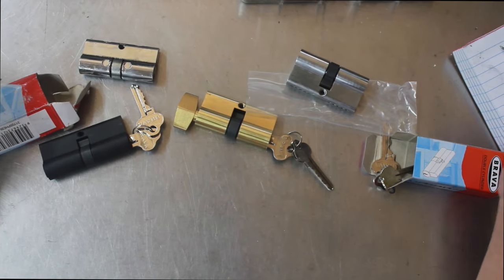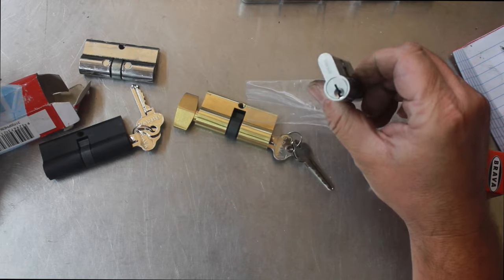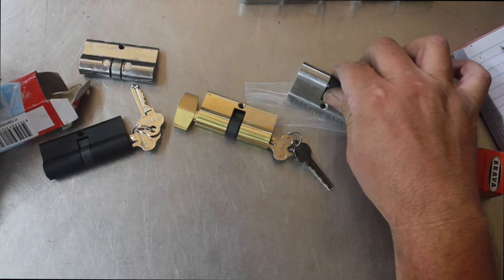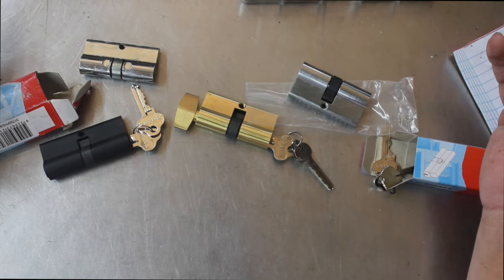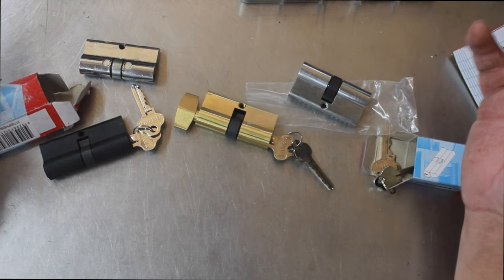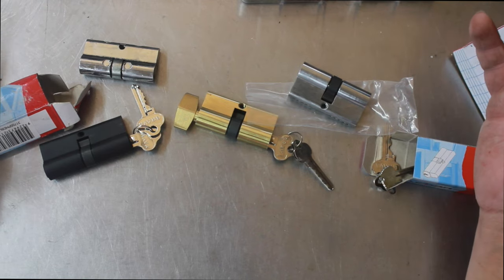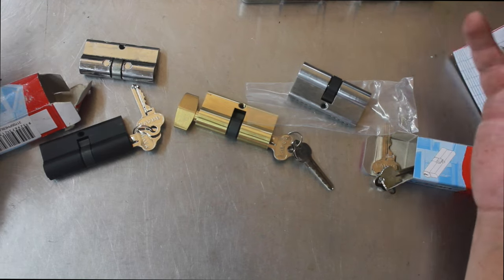Welcome to another video from Dr. Lock. I thought we'd have a quick look at profile cylinders and what the difference is. Now a lot of the time when a locksmith pulls a cylinder out, they first check it to make sure it's going to suit the right lock. There's generally two types: fixed cam and floating cam.